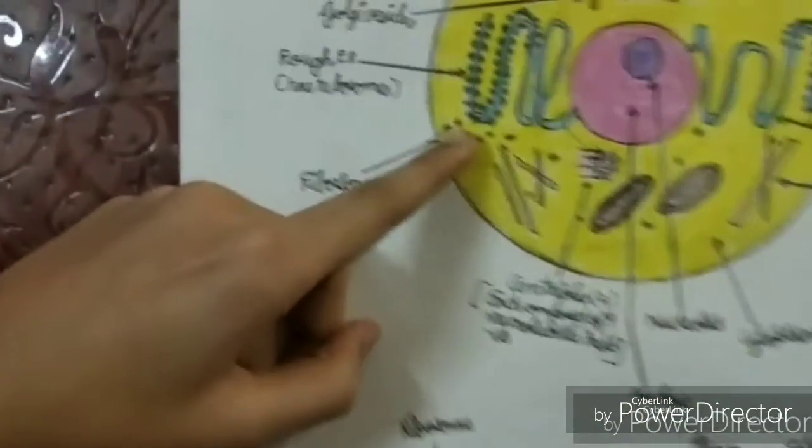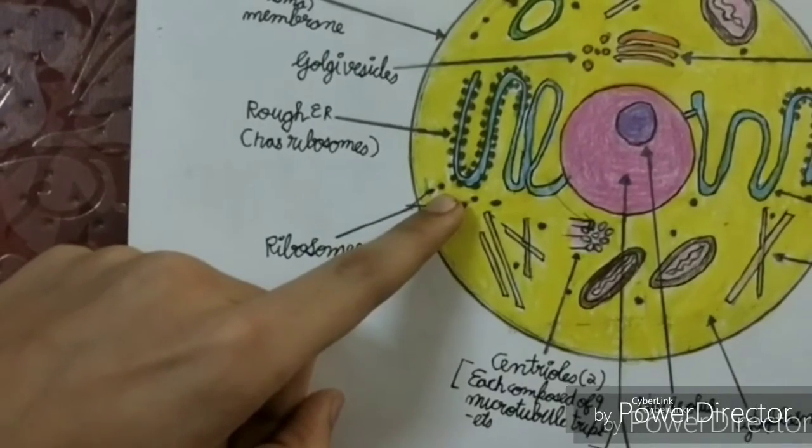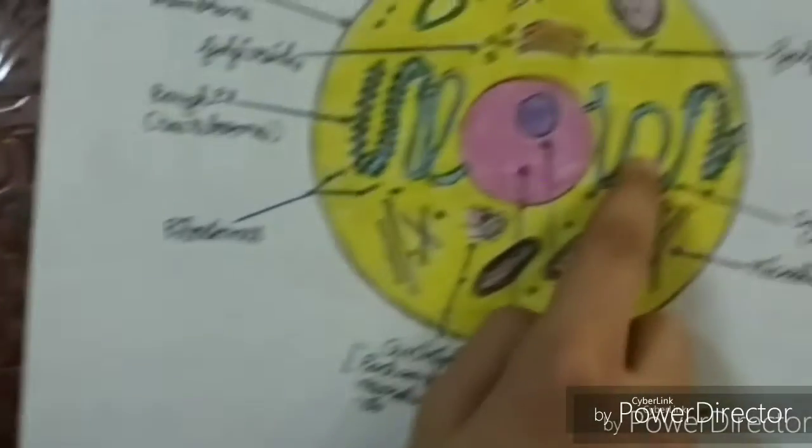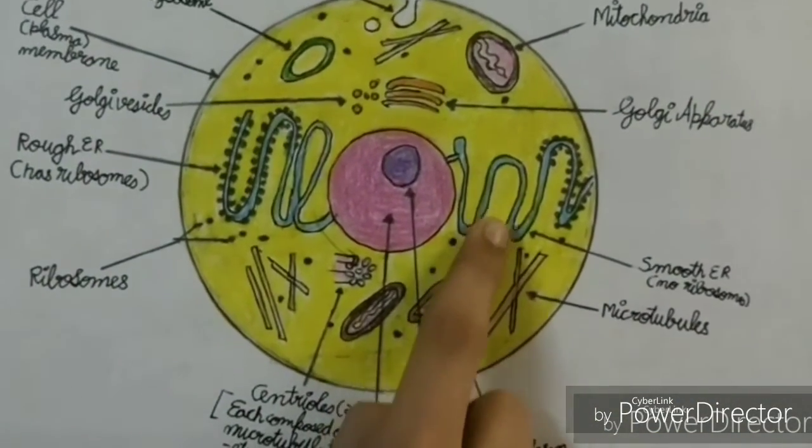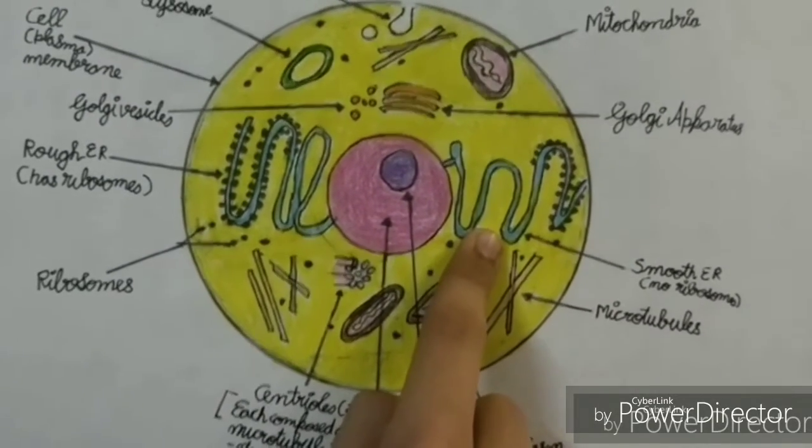This one is the rough endoplasmic reticulum. It is the site of protein synthesis and consists of ribosomes. On the other hand, this is the smooth endoplasmic reticulum, which lacks ribosomes and is the site for lipid synthesis. It also helps in detoxification of poisons.